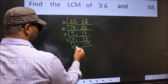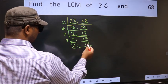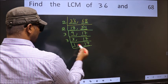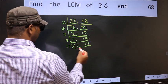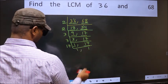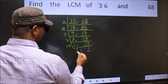Now we got 1 here. So focus on the other number 17. 17 is a prime number. So 17, 1 is 17. So we got 1 in both the places.